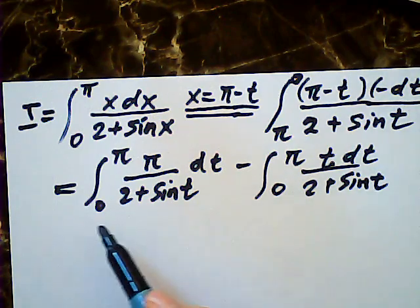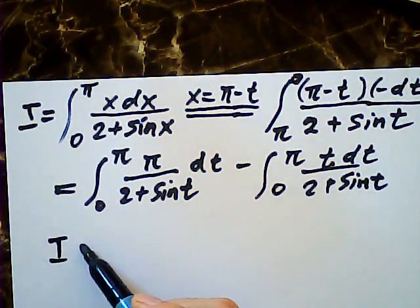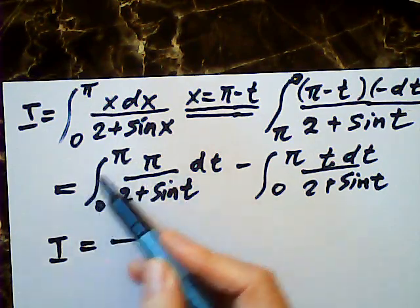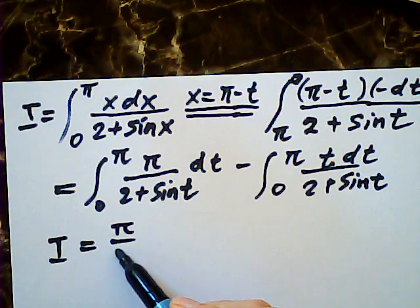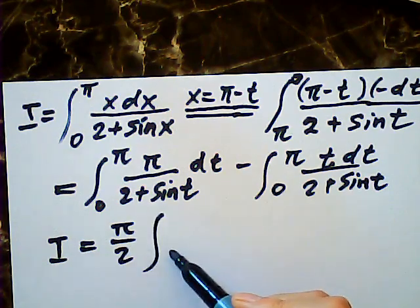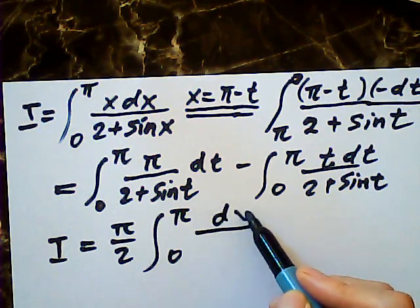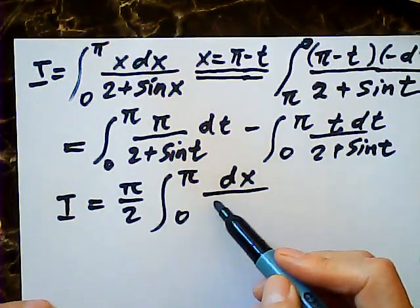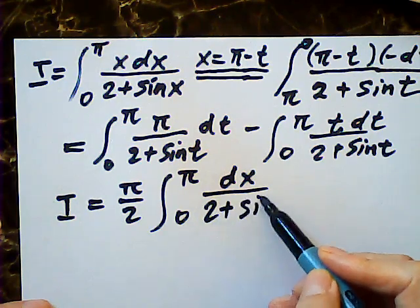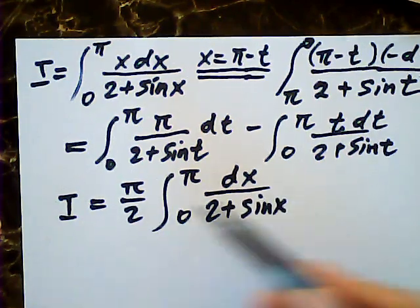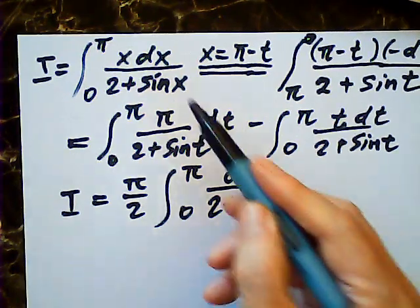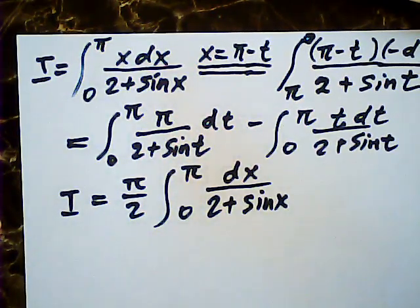Therefore, my I is equal to one half of this one, right? Half zero to pi. Let me change it to x, two plus sine x. See, it's better because I don't have x in the numerator.